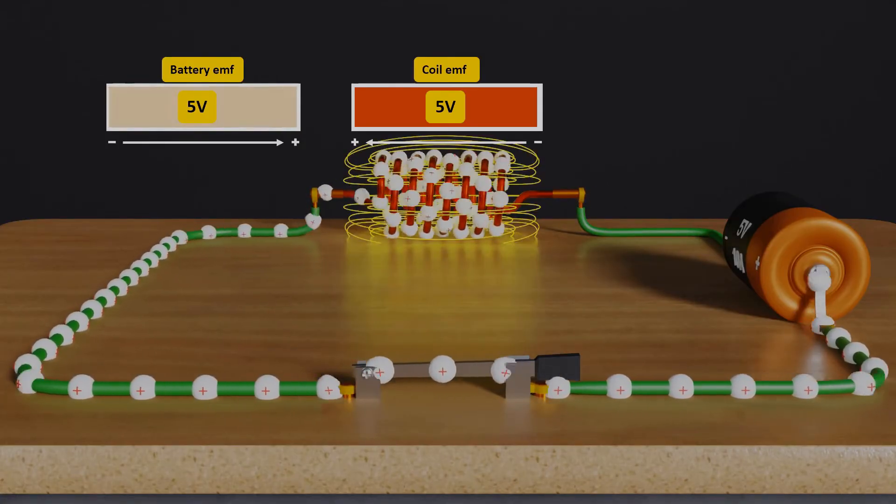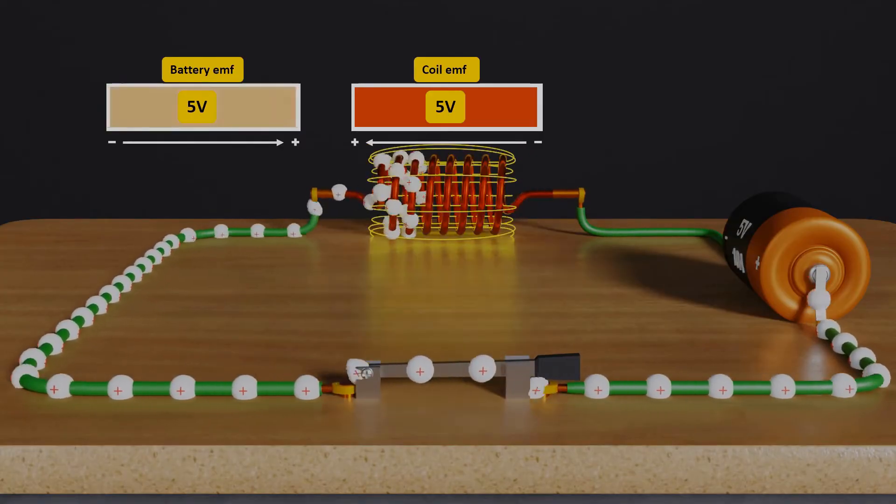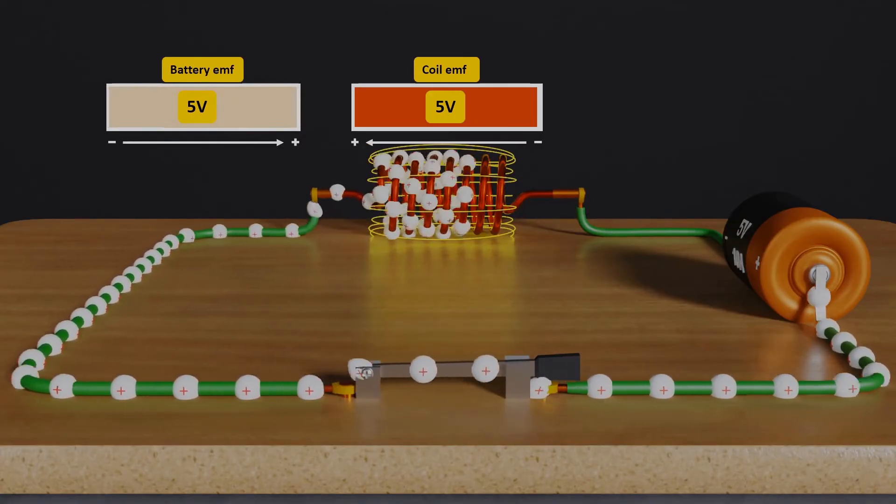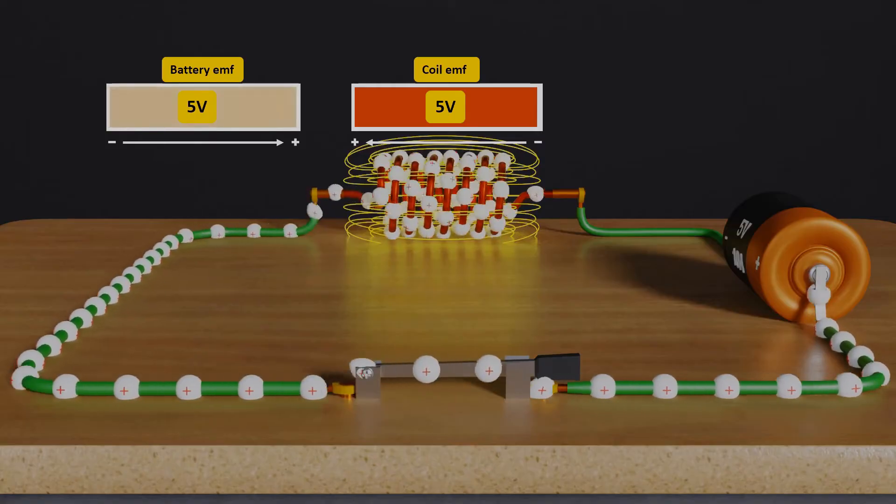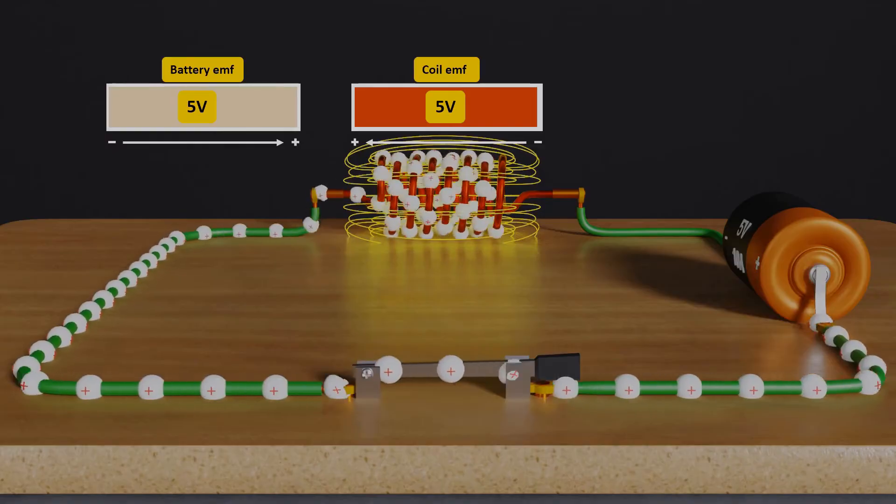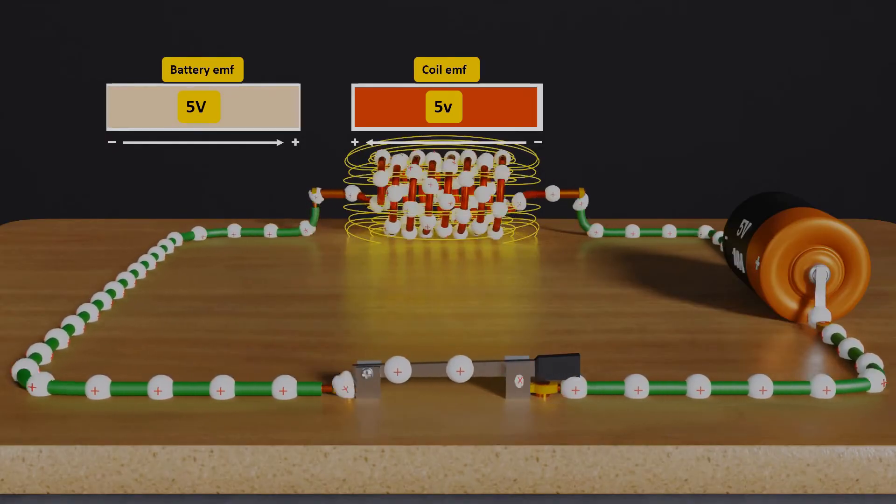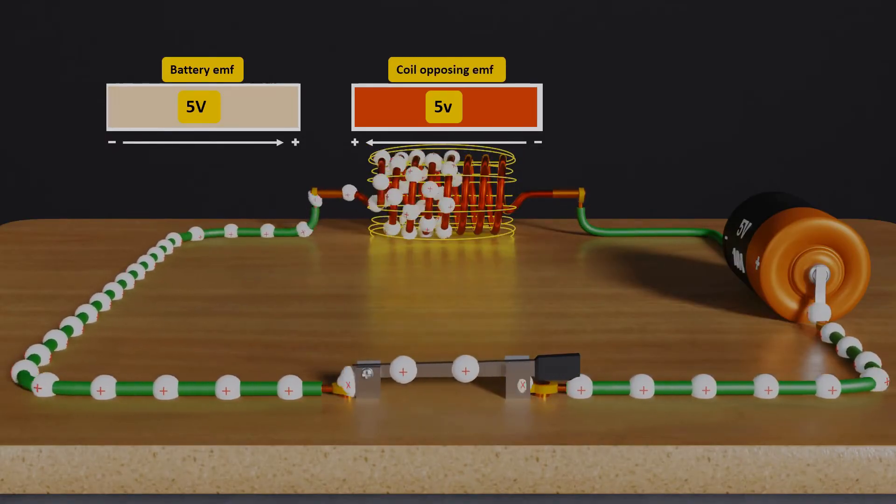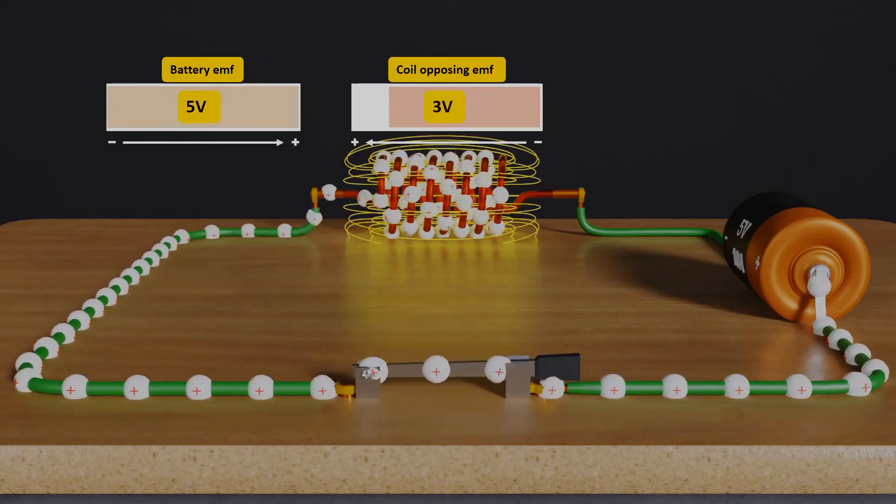Thus, according to Faraday's second law of electromagnetic induction, magnitude of EMF induced will also be less. And by Lenz's law, the opposite EMF will also be less. Let us assume the opposite EMF induced by a coil is 3 volts this time.